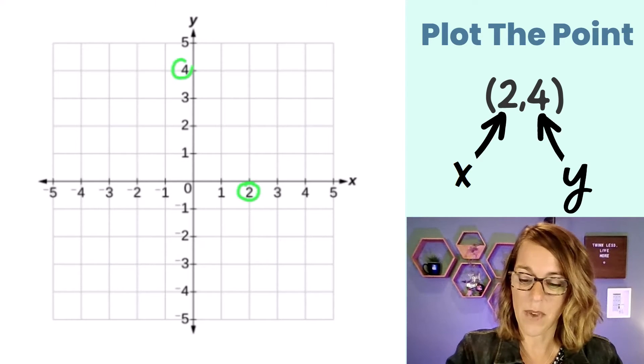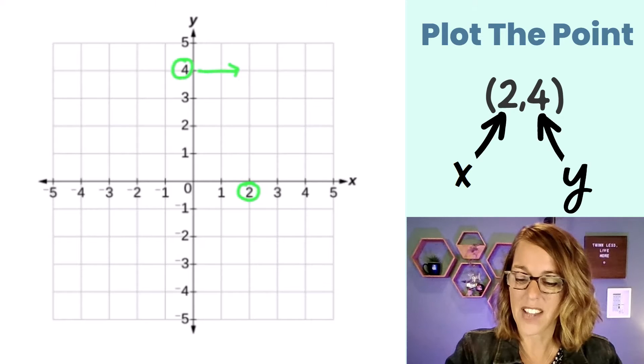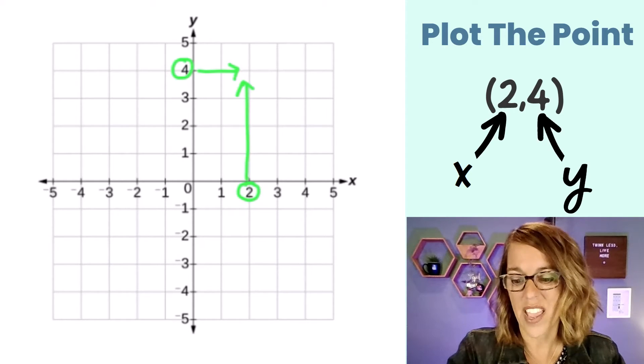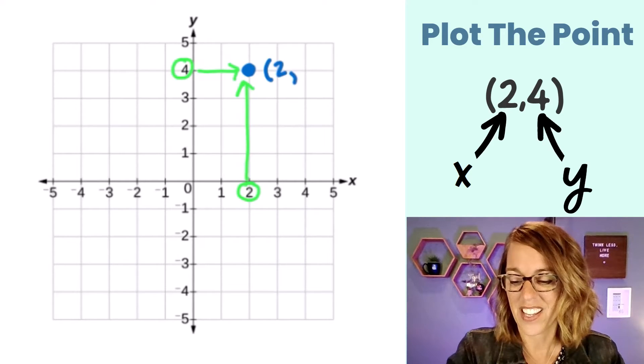And then 4 on my Y-axis. There it is. I'm going to match these up. I can line up the 2 and the 4, and I get this point here, which I can label (2,4).